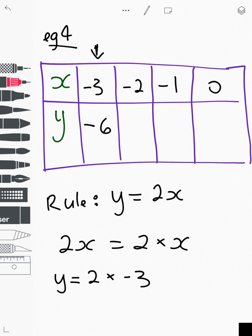2 times 2 is 4. A positive and negative multiplied together give you a negative, so that's negative 4. 2 times 1 is 2. A positive and negative give you a negative, so that's negative 2. And 2 times 0 is 0. So that is how we use variables to complete a table of values.